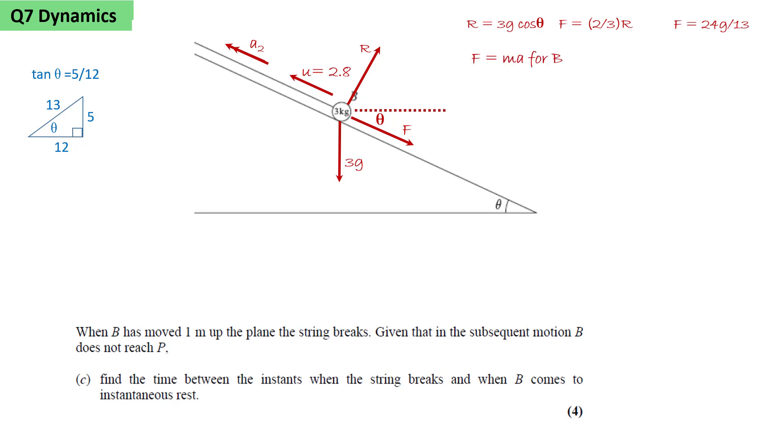Applying F equals ma for B along the plane, we can see that minus 3g sin theta minus F, the two forces acting along the plane on the mass of 3g, will equal the mass 3 times the new acceleration a2, from which we can calculate a2 as being equal to minus g.